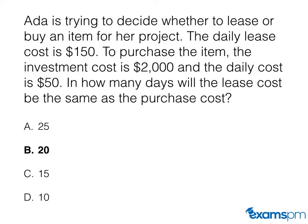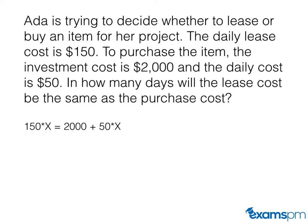The answer is B. Let's look at how we arrive at the answer. We want to get to a point where the cost of leasing this product is equal to the cost of buying this product. So we have 150x as the daily lease cost, and the purchase cost is $2,000 plus 50x, where x represents the number of days.